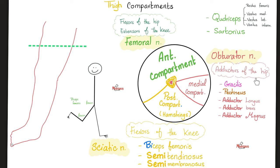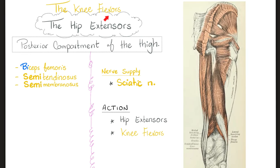We're done with the anterior and medial compartments. Now the posterior compartment of the thigh — its functions are extension of the hip and flexion of the knee. The muscles are biceps femoris, semitendinosus, and semimembranosus. Biceps femoris has two heads at its origin — a short head and a long head, very similar to the biceps brachii — and it inserts into the head of the fibula. The area behind the knee is the popliteal fossa, from which emerge the popliteal artery, popliteal vein, and tibial nerve. The muscles of the posterior compartment are supplied by the sciatic nerve.